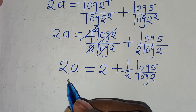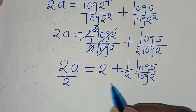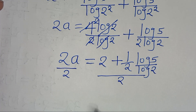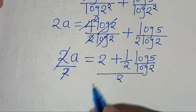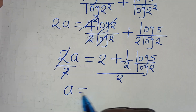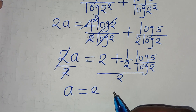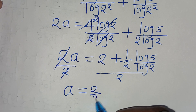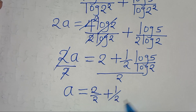The next step is to divide both sides by 2, so that a equals 1 plus one-quarter of log 5 divided by log 2.